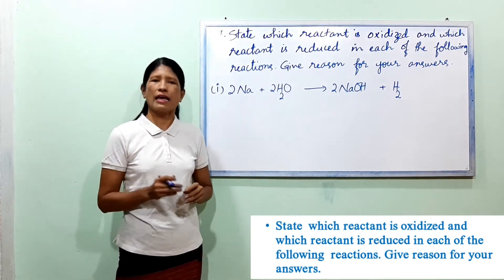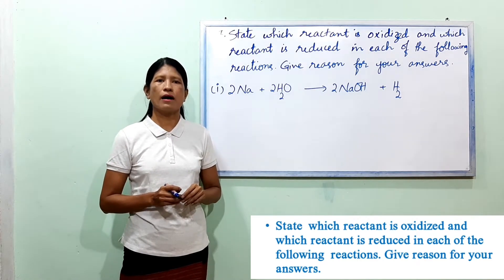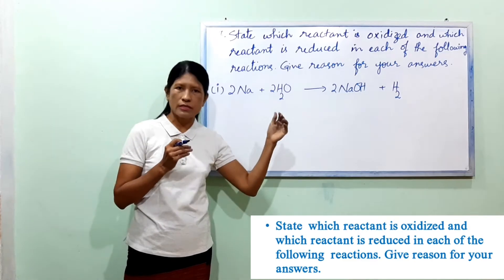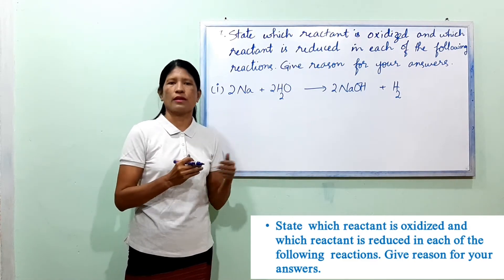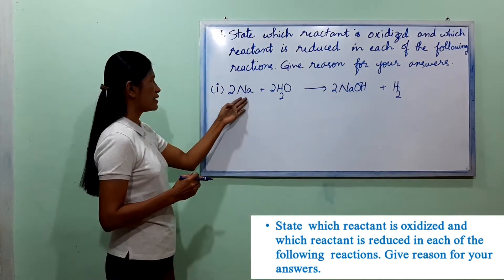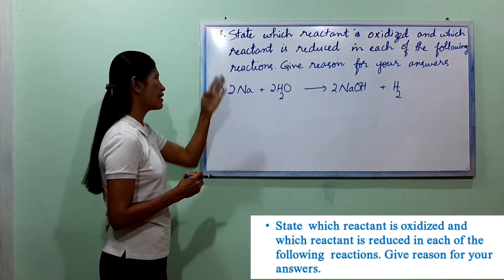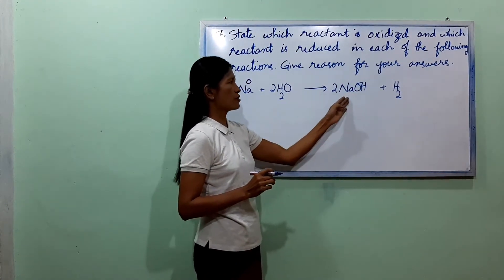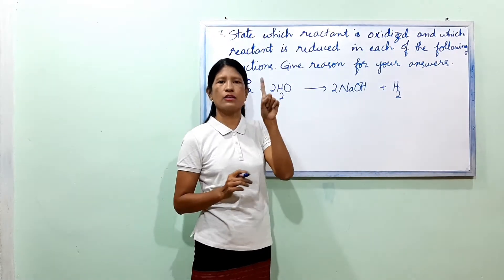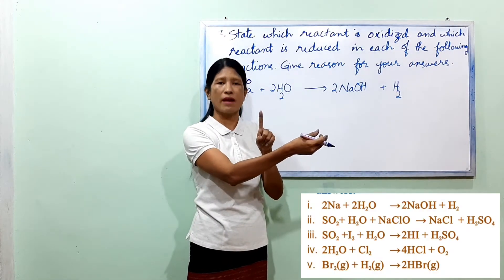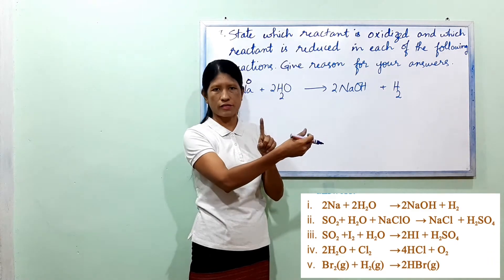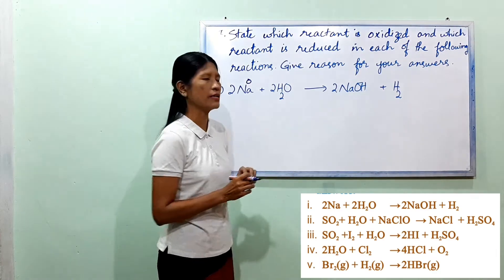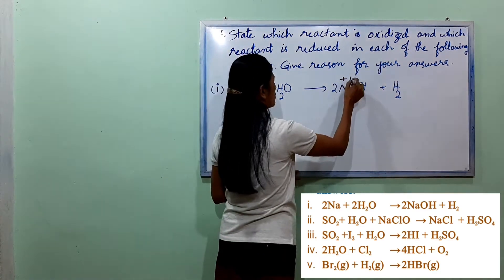Give reasons for your answer. Na as a free element is 0. NaOH: Na is +1, OH is hydroxide which is -1. So in NaOH, Na is +1.